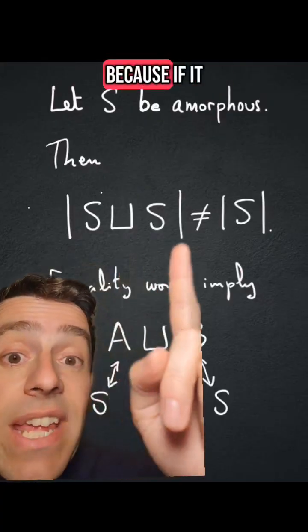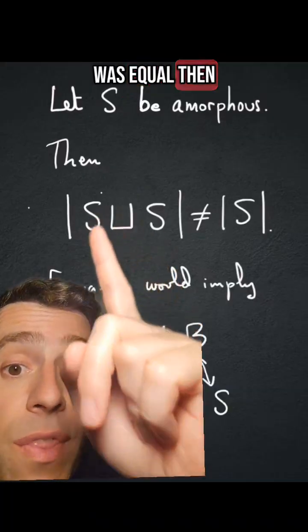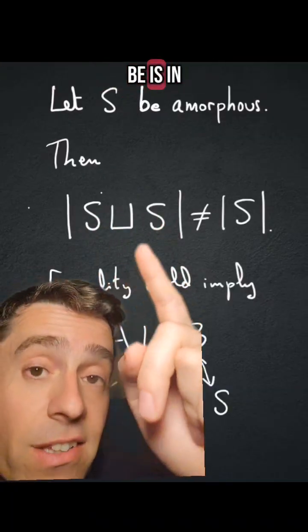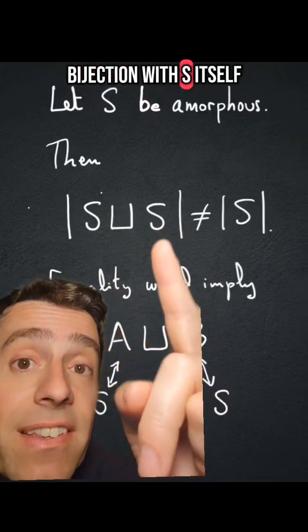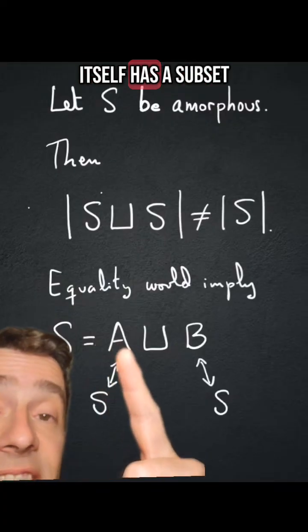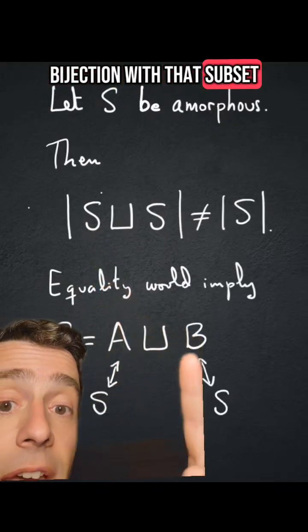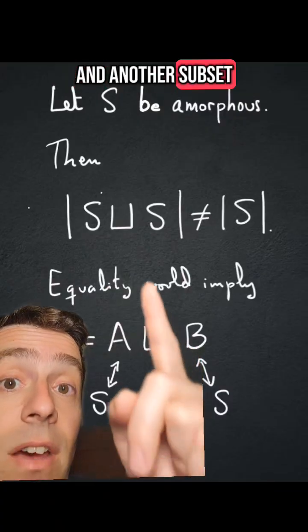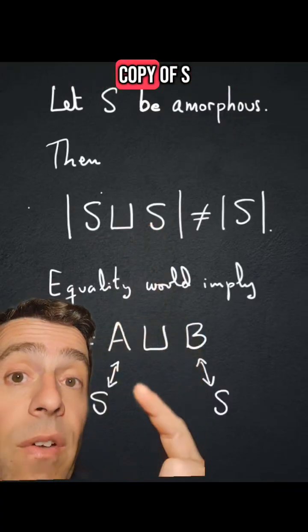Why? Because if it was equal, then this set would be in bijection with S itself, and that would mean that S itself has a subset that is in bijection with that subset, and another subset which is in bijection with this copy of S.